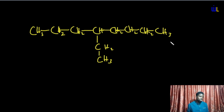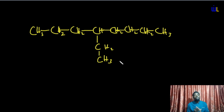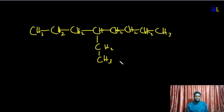Try naming the next compound shown. Hint: it has a two-carbon substituent, which will be referred to as an ethyl group. Remember to look up the earlier video on the parts of an organic name — prefix, infix, and suffix — linked in the description. That video will really help you understand this one better.